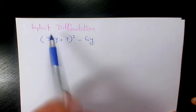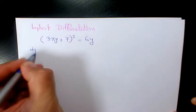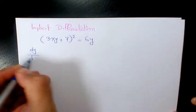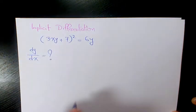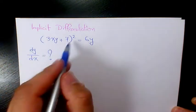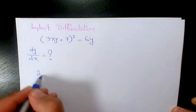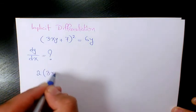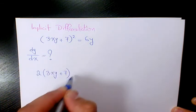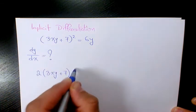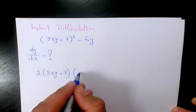We need to use implicit differentiation and we need to find out the first derivative, dy over dx. So that's going to be 2 times 3xy plus 7 times the derivative of this part,